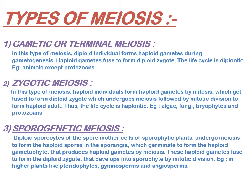In sporogenetic meiosis, diploid sporocytes or spore mother cells of the sporophytic plant undergo meiosis to form haploid spores in the sporangia. The haploid spore germinates to form the haploid gametophyte, which produces haploid gametes by mitosis. Haploid gametes fuse to form the diploid zygote, which develops into the diploid sporophyte by mitotic division. Examples include pteridophytes, gymnosperms, and angiosperms.